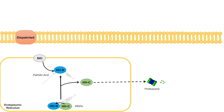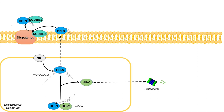Now the HHN protein has both a palmitic acid moiety and a cholesterol moiety attached to it. Once the HHN has both of these moieties attached, it actually gets exported out of the endoplasmic reticulum and gets placed into the plasma membrane of the cell. The hedgehog protein will then be acted on by a protein within the plasma membrane known as Dispatched, and there is also another protein involved in this process known as SCUBE2. The SCUBE2 and the HHN, or the hedgehog mature protein, get attached to each other and actually get released from the plasma membrane.